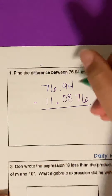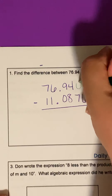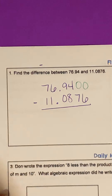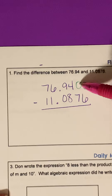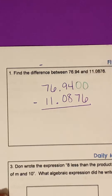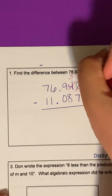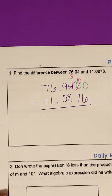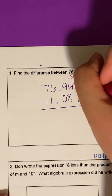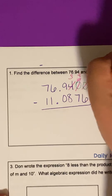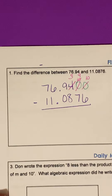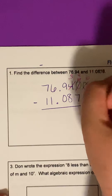Let's put placeholder zeros up here. Now when we subtract zero minus six, you cannot do that, so we need to borrow. We can't borrow here either, so we need to borrow again. This four becomes a three to make this zero a 10. Now we can borrow from this 10 to make it a nine and make this a 10.